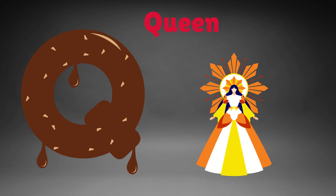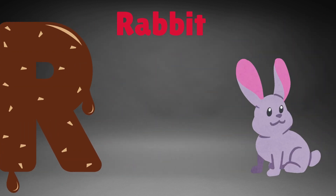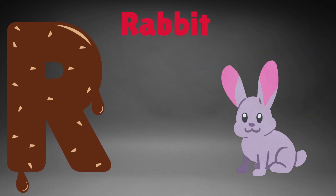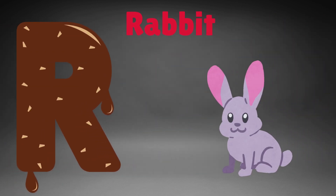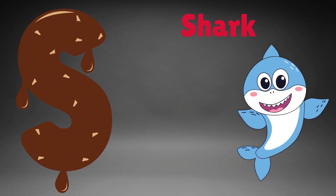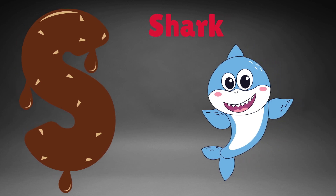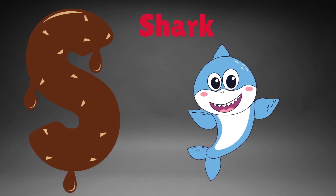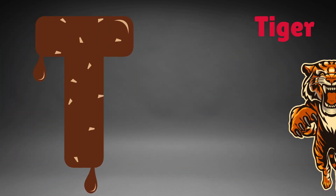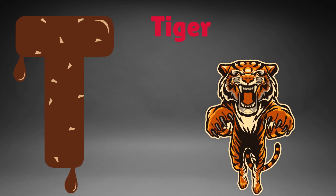Q is for queen, q-q-queen. R is for rabbit, r-r-rabbit. S is for shark, s-s-shark. T is for tiger, t-t-tiger.